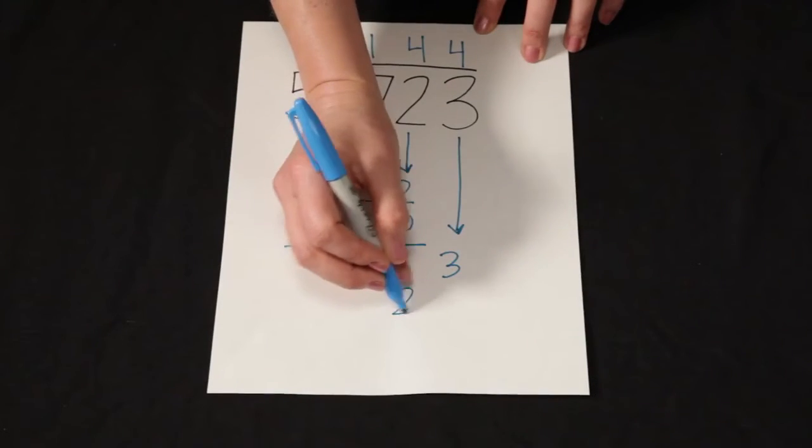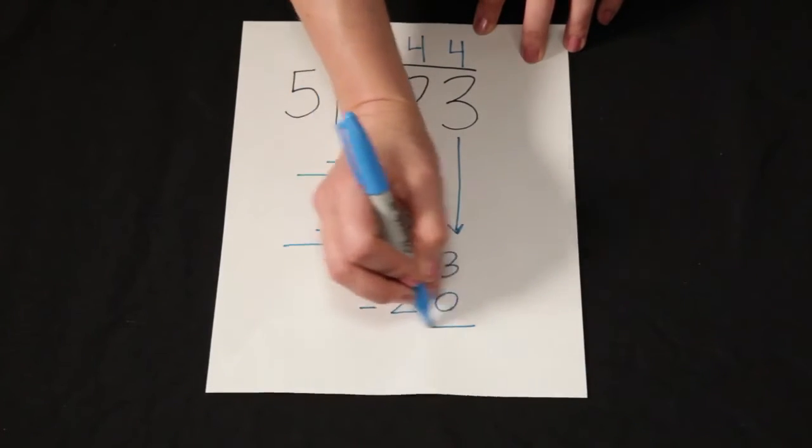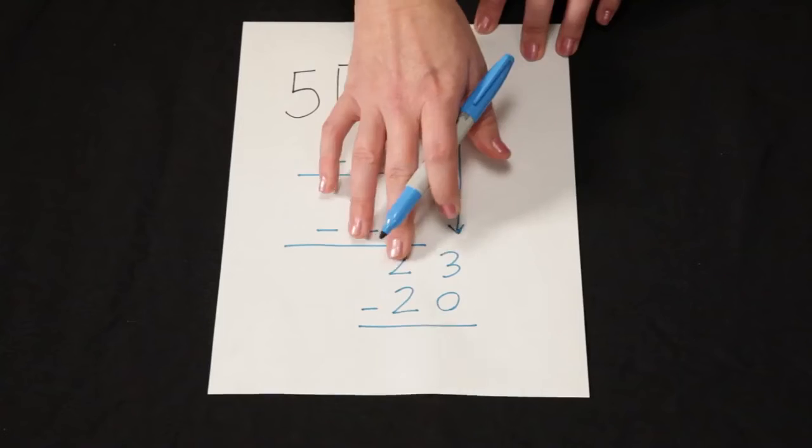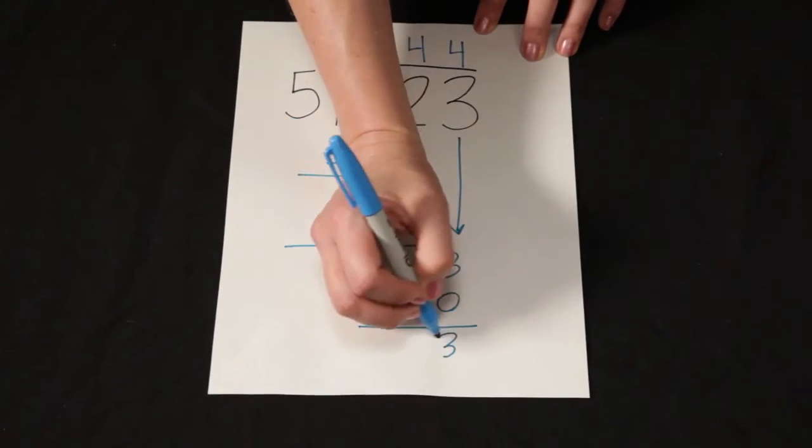5 times 4 is 20. And I'll subtract to figure out what I have remaining. 23 minus 20 is 3.